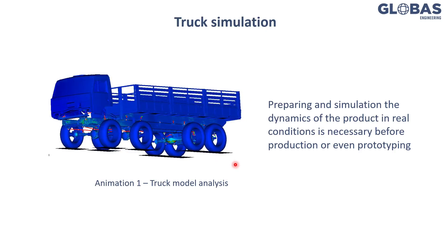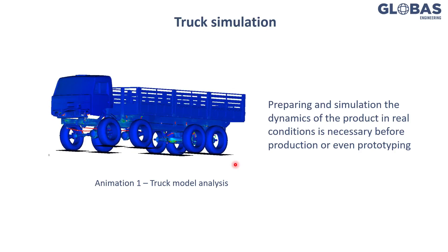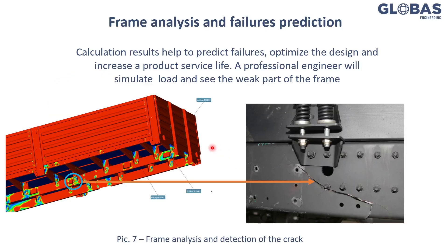Then results should be transferred to the strength analysis software. This analysis can be performed in finite element method software like Nestron. Analysis results show us the weak areas of the frame, marked with blue and green colors. It can also show us the real crack itself and its formation. We see that the predicted failure corresponds to the real one, so these results could be used to predict and prevent failures during the design process and optimization.